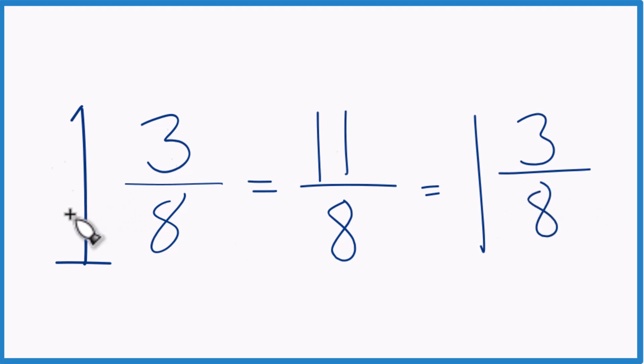This is Dr. V writing the mixed number 1 and 3 eighths as an improper fraction. The answer, 11 eighths. Thanks for watching.